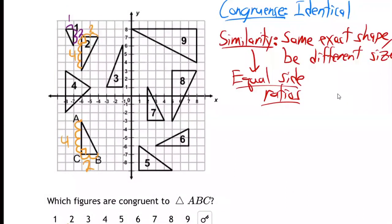What about triangle three? It's five by two — one, two, three, four, five by one, two. That's just different. Let's go to triangle four. He's got a hypotenuse of five — that's the side across from the right angle — and the other two sides go diagonally. He just seems totally different. Triangle five is three by four — one, two, three by one, two, three, four. He's different. ABC is a two by four, like triangle two is.